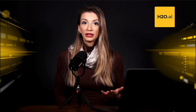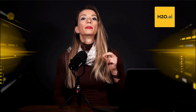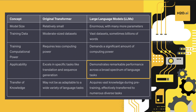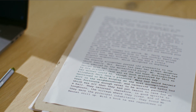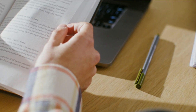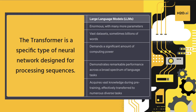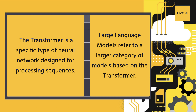Lastly, concerning their applicability, the distinction between transformers and LLMs is as follows. The original transformer excels in specific tasks like translation and sequence generation, but it may not be as adaptable to a wide variety of language tasks. On the contrary, large language models have demonstrated remarkable performance across a broad spectrum of language tasks. They shine as superstars in natural language processing. Please remember that the transformer is a specific type of neural network designed for processing sequences, while large language models refer to a larger category of models based on the transformer.